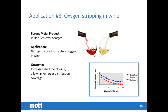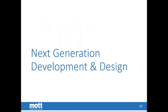Oxygen stripping in wine is probably the most common application on the sparging side of our business. Oxygen in any food product reduces shelf life and quality. For bottled beverages including wine, it is critical to ensure no oxygen is present in the liquid being bottled. Porous metal spargers are used to add nitrogen or carbon dioxide, which strips the oxygen and results in significantly higher shelf life.